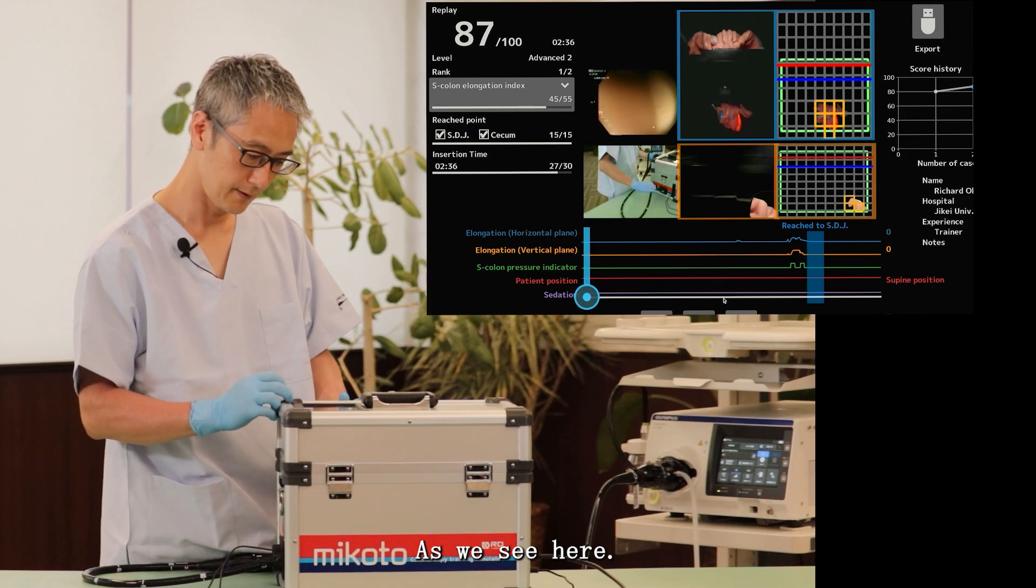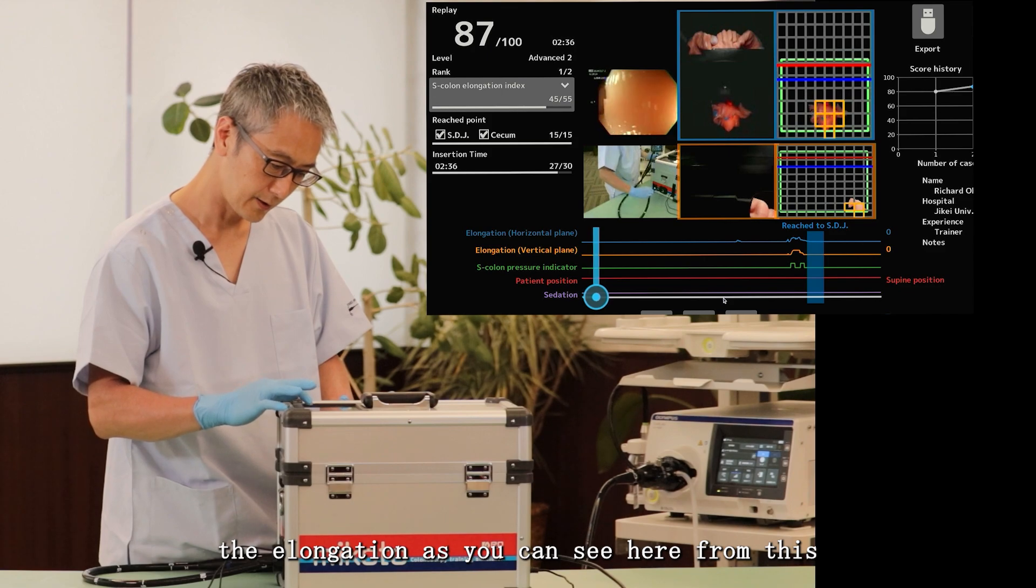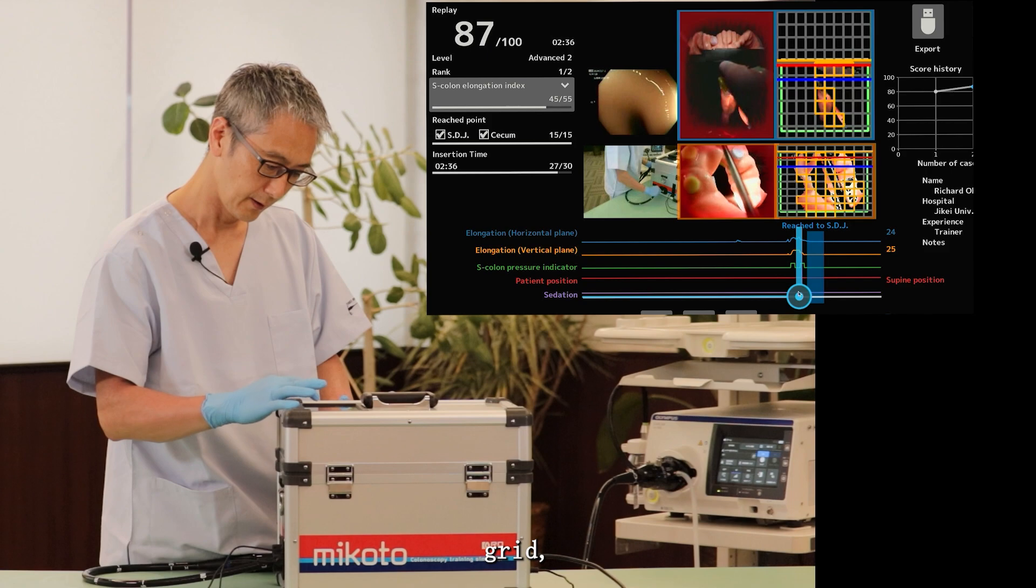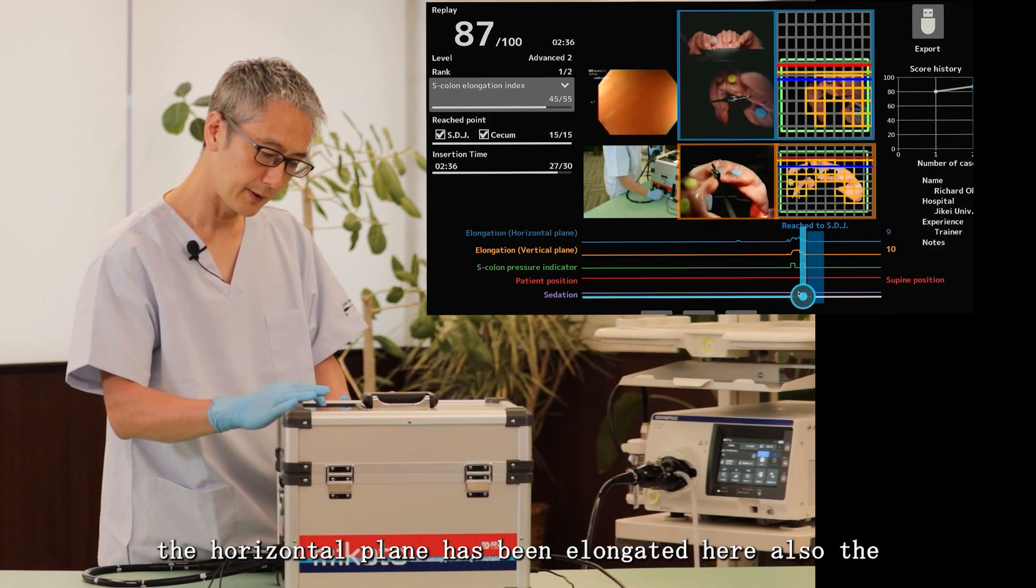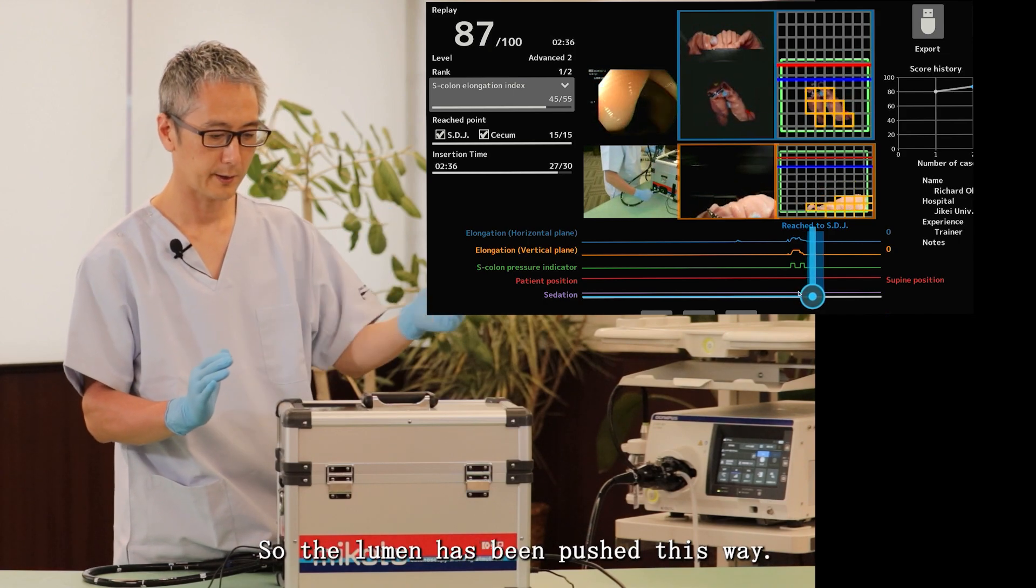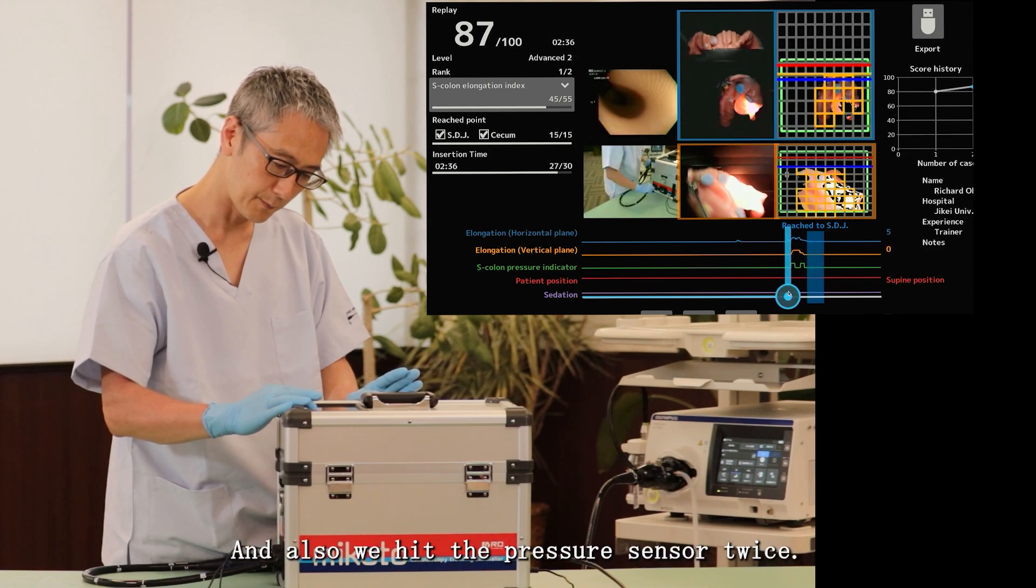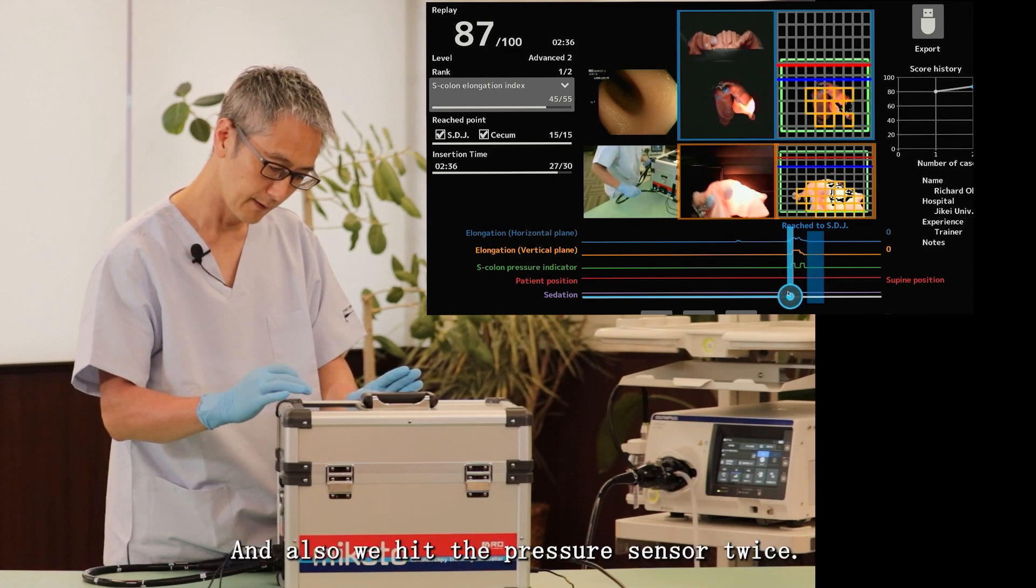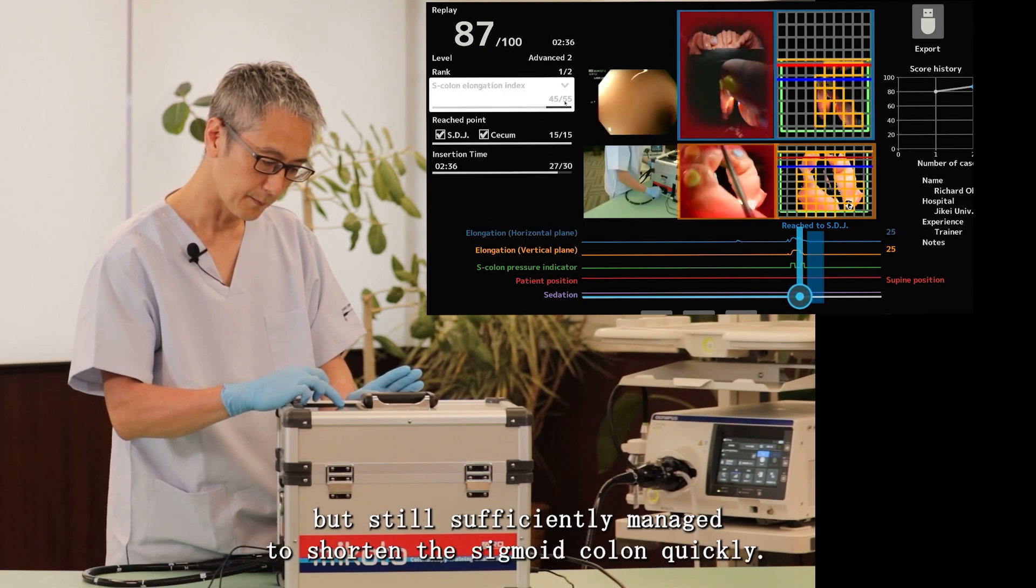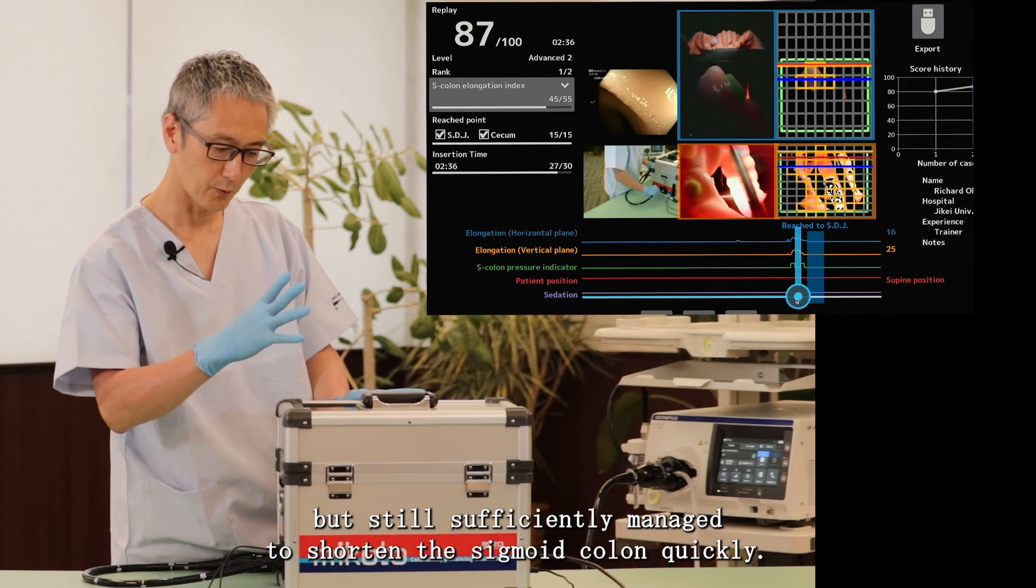As we see here, again the elongation, as you can see from this grid. The horizontal plane has been elongated here, also the vertical plane. So the lumen has been pushed this way, also this way. And also we hit the pressure sensor twice. That's why I lost a couple of points.